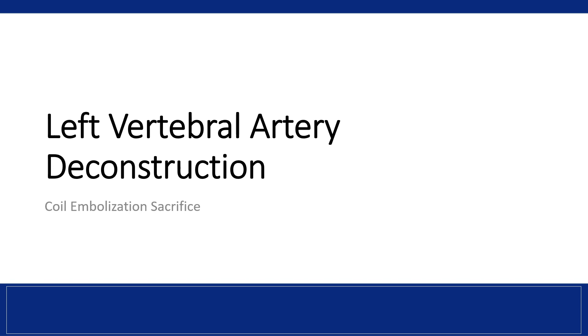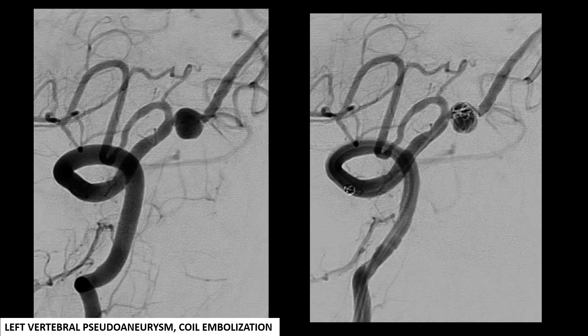Attention was then turned towards the left side. A Headway microcatheter was used to access the pseudoaneurysm and coil embolization was performed. During coiling, the microcatheter was kicked out of the pseudoaneurysm. Given the close proximity of the left PICA origin and the significantly slow distal filling, coiling was stopped. Contrast washout from the reconstructed right vertebral artery was noted distal to the coiled pseudoaneurysm.